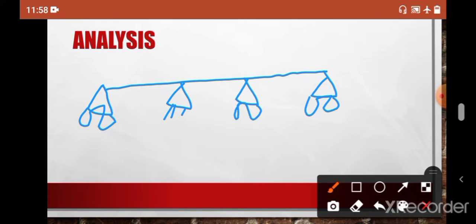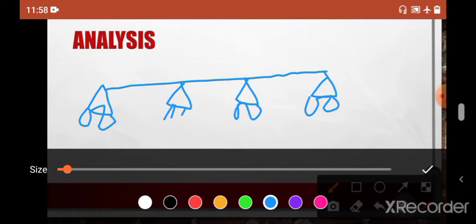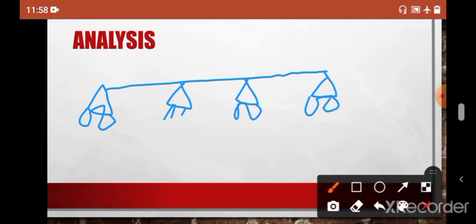Here I am marking this by red color. Let's say first internal hinge is here and second one is here.